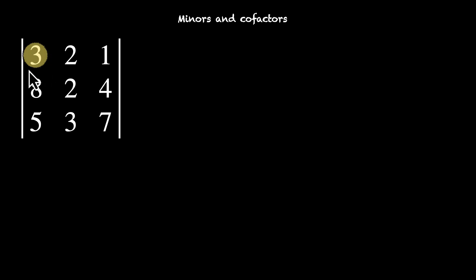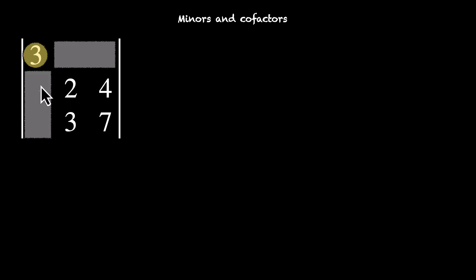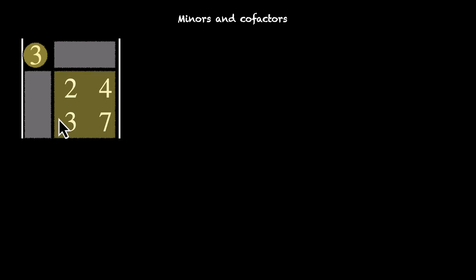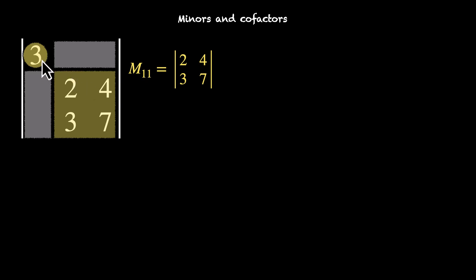Let's pick this element, 3. To find the minor of 3, the first thing we need is to ignore all the elements of the row and the column that has this element 3. So this 3 is in the first row and first column, so we ignore all the remaining elements. We are left with a 2x2 matrix. The determinant of this matrix, M11, is the minor for this element. We call it M11 because it corresponds to the first row and first element. So M11, the minor, equals the determinant of 2, 4, 3, and 7.